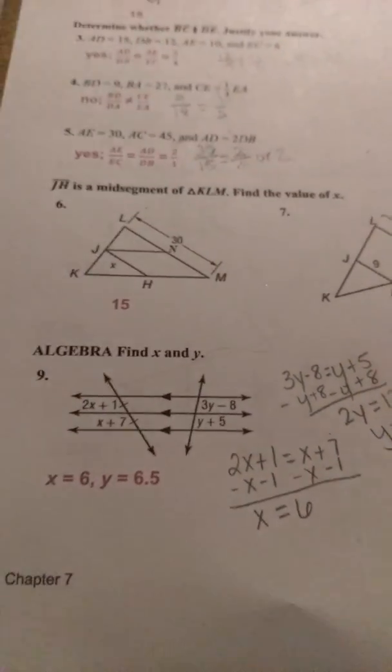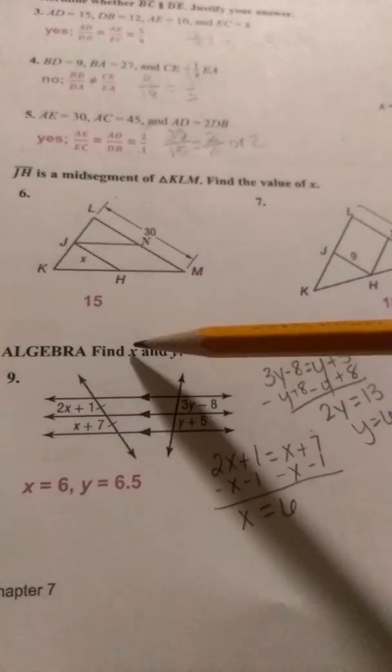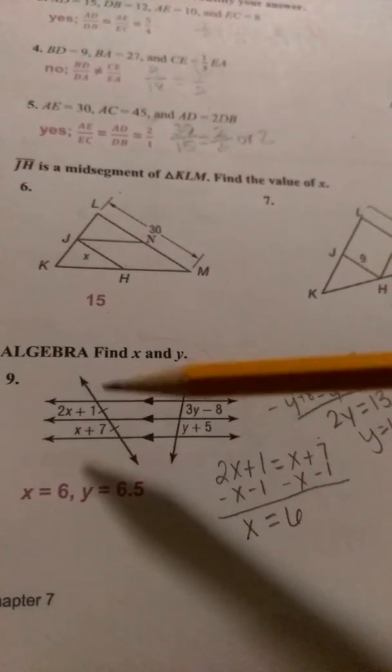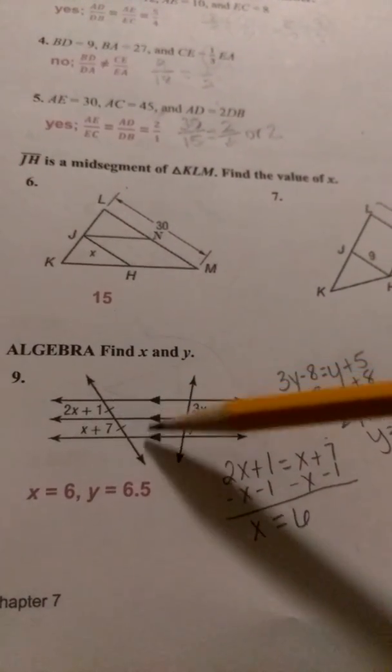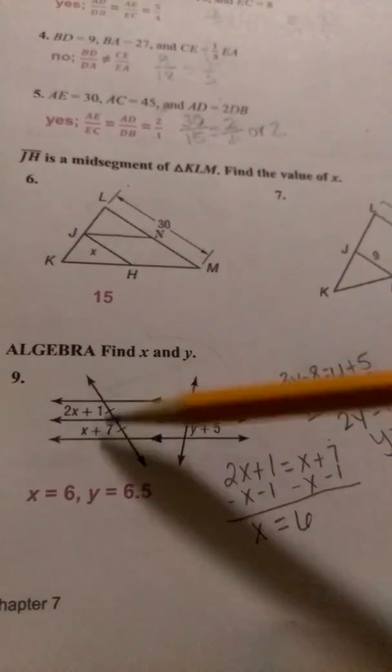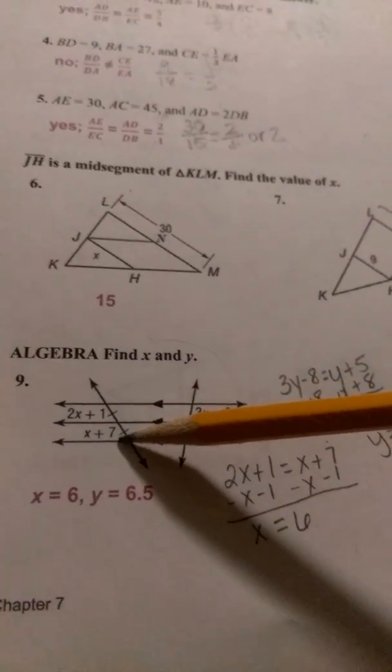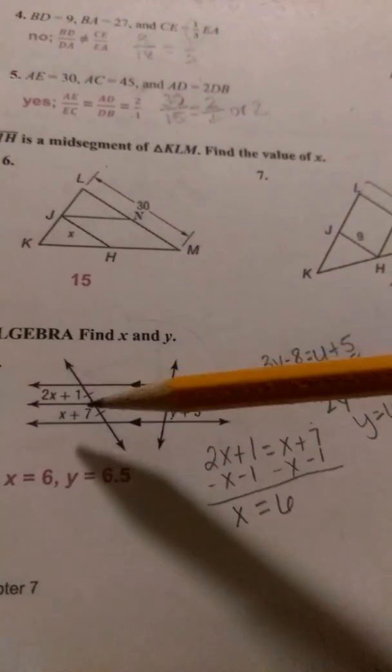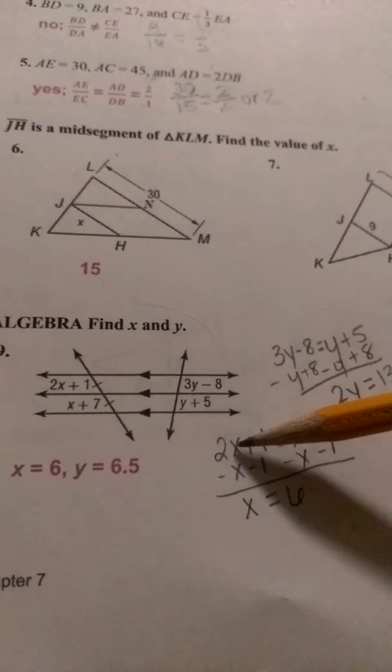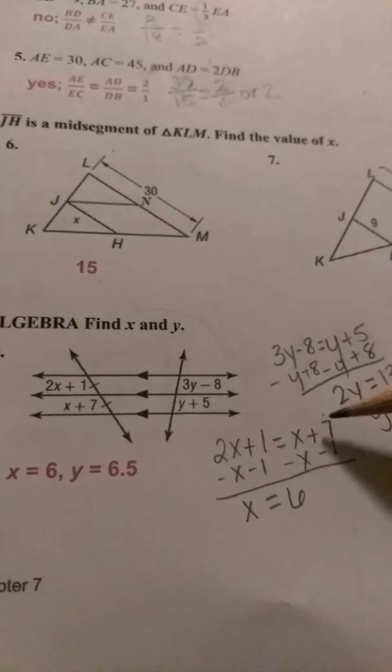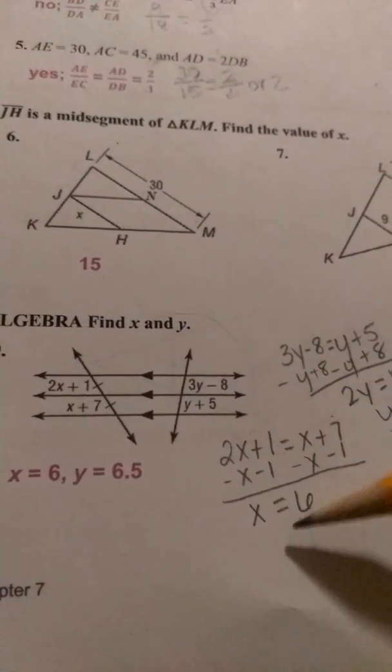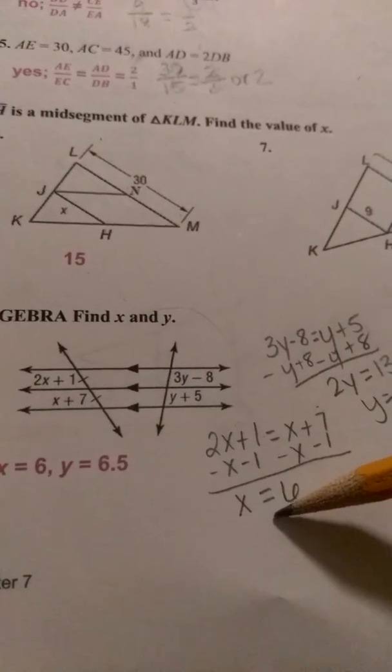Number 9, we're trying to find what X and Y are, and since these lines are all parallel, then these segments should be congruent to each other. So all you really have to do is set them equal to each other. So we have the 2X plus 1 is equal to X plus 7. And then you solve for X. X should equal 6.